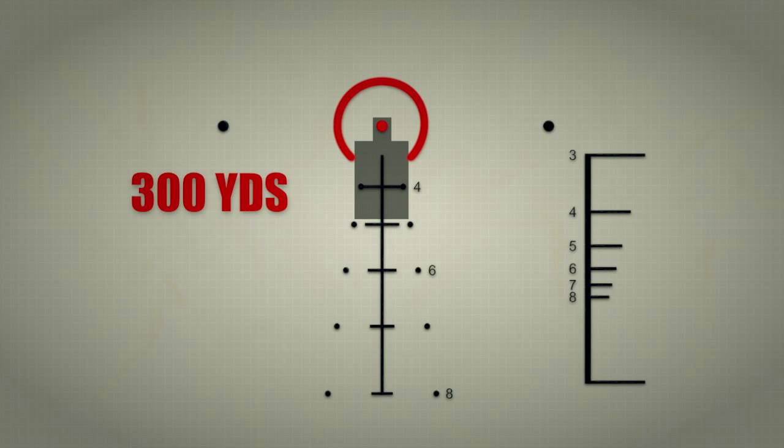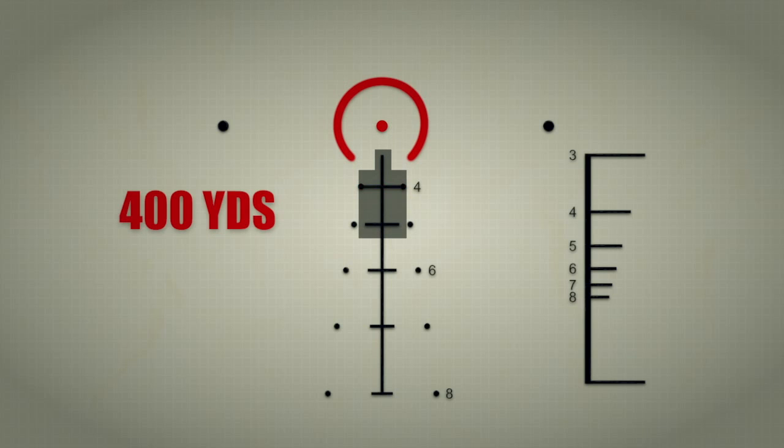For 300 yards range using the open end of the circle and aim using the post. For 400 yards range and aim using the first crosshair with the number four next to it.